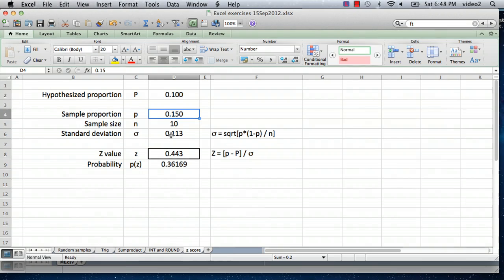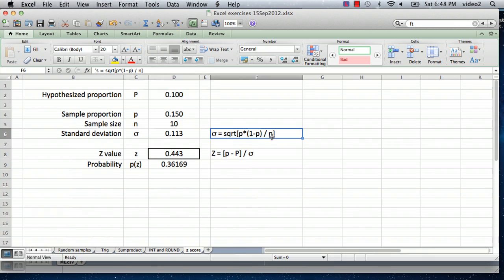The formula for doing that is first we need to know the standard deviation of the sample, and the function is shown over here. The formula for calculating the standard deviation is the square root of the proportion times 1 minus the proportion, all of that divided by the sample size. And in our case, the standard deviation in whatever units we're measuring this in is 0.113.